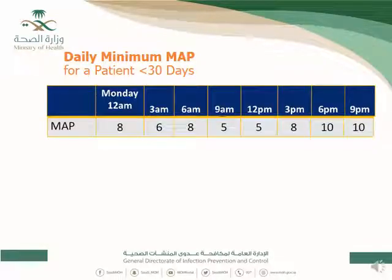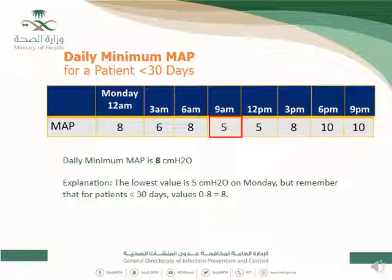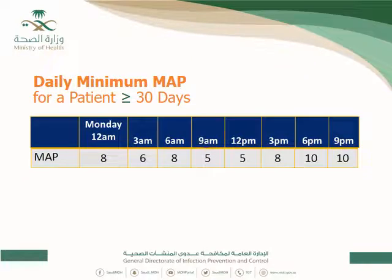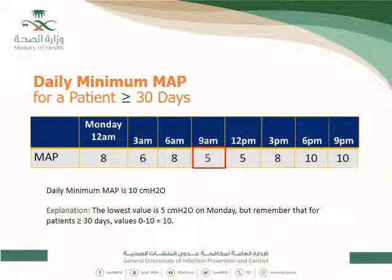Consider an infant less than 30 days with readings every three hours. There is no one-hour maintenance requirement, so take the lowest value. The lowest is 5 at 9 a.m. Since the patient is under 30 days, any number between 0 and 8 is considered 8 — so the daily minimum MAP is reported as 5, with 8 in brackets. For a patient 30 days or more with the same lowest value of 5, it would be recorded as 5 with 10 in brackets.